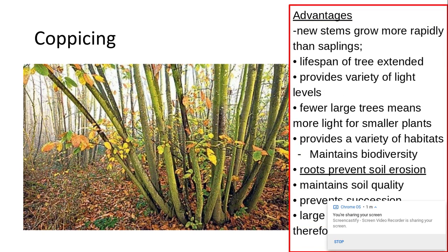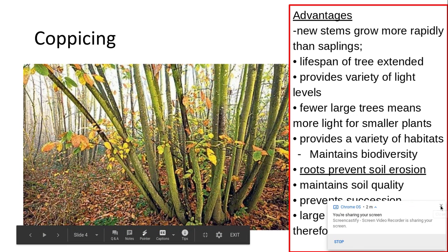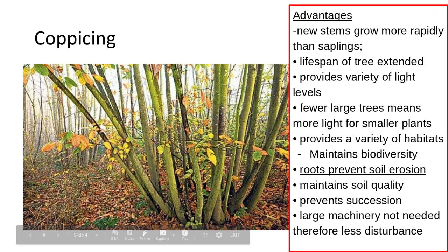The advantages of coppicing: new stems can grow more rapidly than saplings, so coppicing is quicker than planting a tree from seed. The lifespan of the tree is extended. It provides a variety of light levels, because cutting the trunk low allows different light levels to filter in, so smaller plants on the forest floor can access available light. It provides a variety of habitats, maintains biodiversity, and the roots are not removed, which prevents soil erosion. It also maintains soil quality, prevents succession, and large machinery is not needed, resulting in less disturbance to the area and to habitats and other organisms.